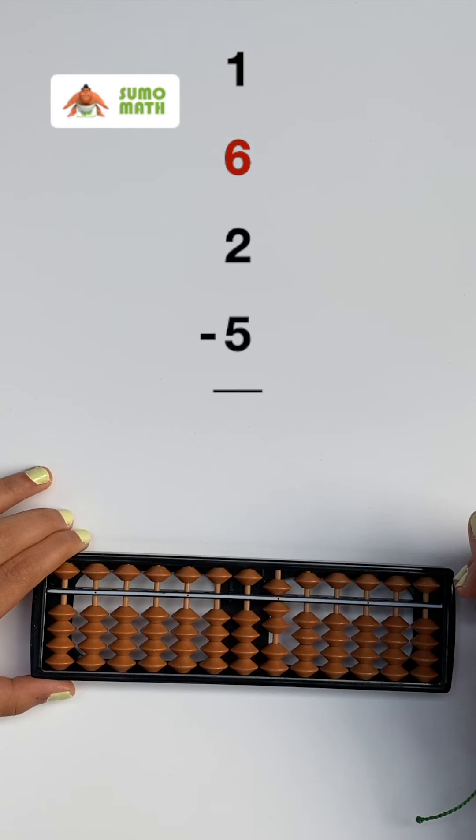Now, we have 7 on the abacus. Next, add 2 by moving 2 lower beads to the bar with our thumb.